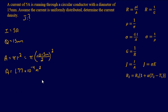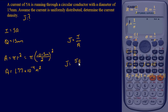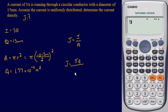Now we have our area and our current, so all we have to do is plug the rest into our calculator. J equals I over area, which comes out to be 5 amps over 1.77×10⁻⁴ meters squared.